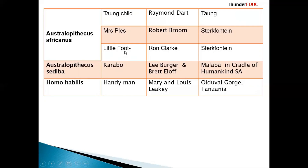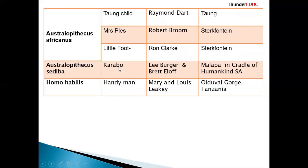Sometimes you can be asked: give two Australopithecus africanus species found in South Africa — then you can name Taung child, Mrs. Ples, and Little Foot. Sometimes you can be asked which one of the following is not an Australopithecus africanus species, listing Taung child, Mrs. Ples, Little Foot, and Karabo — because Karabo is Australopithecus but not Australopithecus africanus. If asked to just give three Australopithecus species, even Karabo can be included.